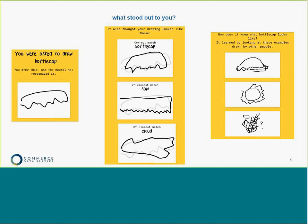One of the observations is that folks drew things in a different orientation than the training images for the same doodle, and the model was still able to classify it. That ability to find the image even if it's scaled differently or in a different part of the canvas is a really interesting part of deep learning, and we're going to talk about that as well.